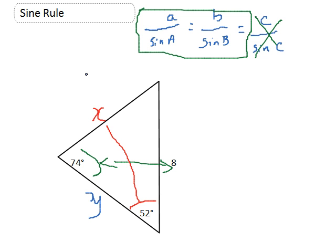Okay, I always go back to my original formula like that, because that's the way I'm going to write it down. So I'm going to write down that 8 over sine 74 equals X over sine 52.